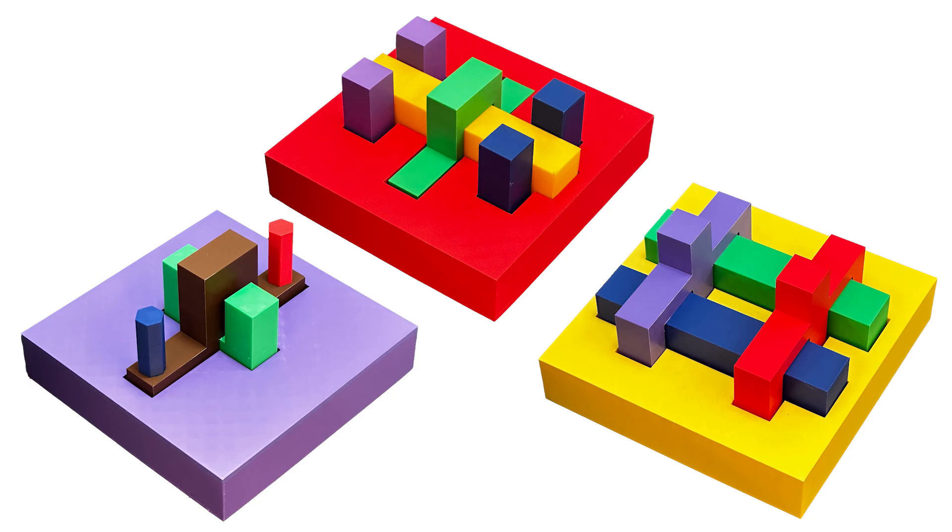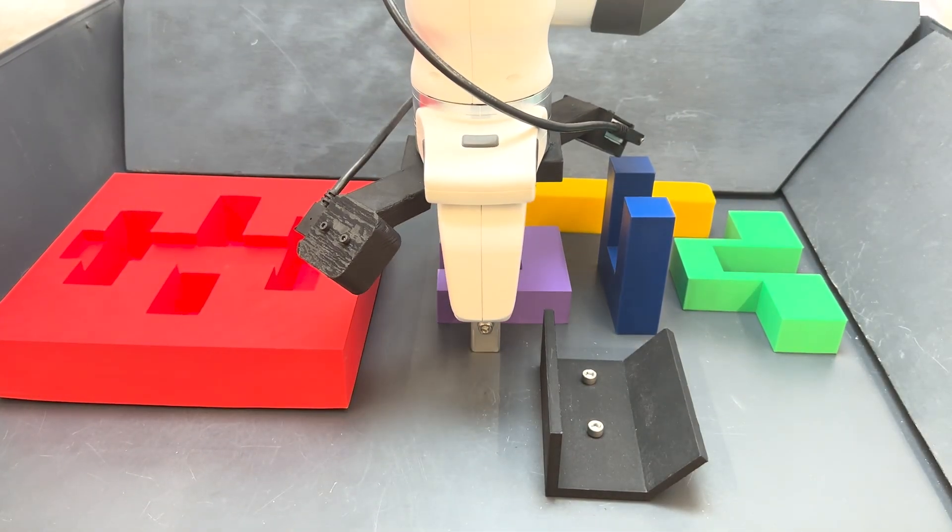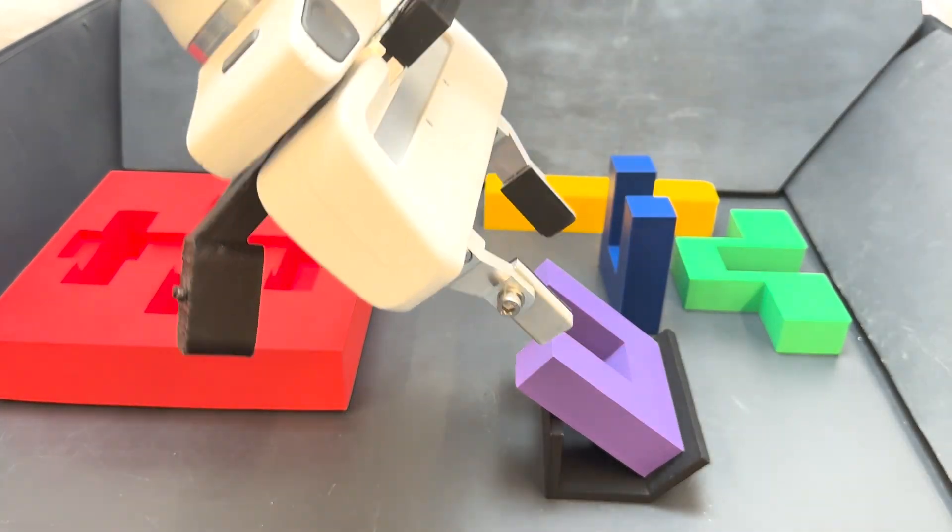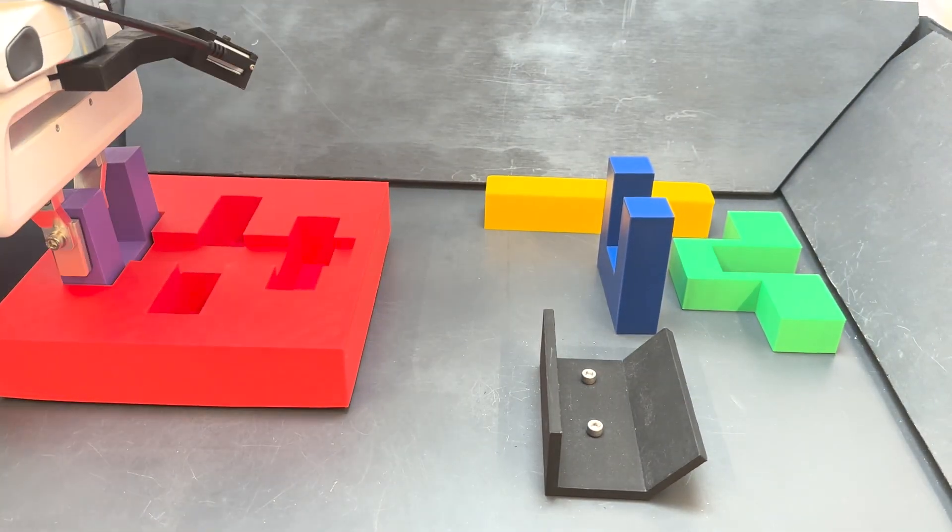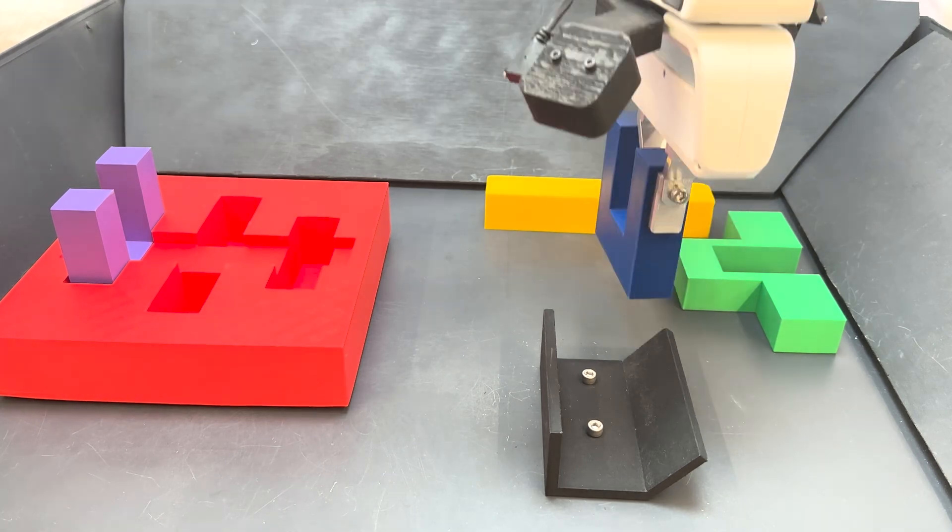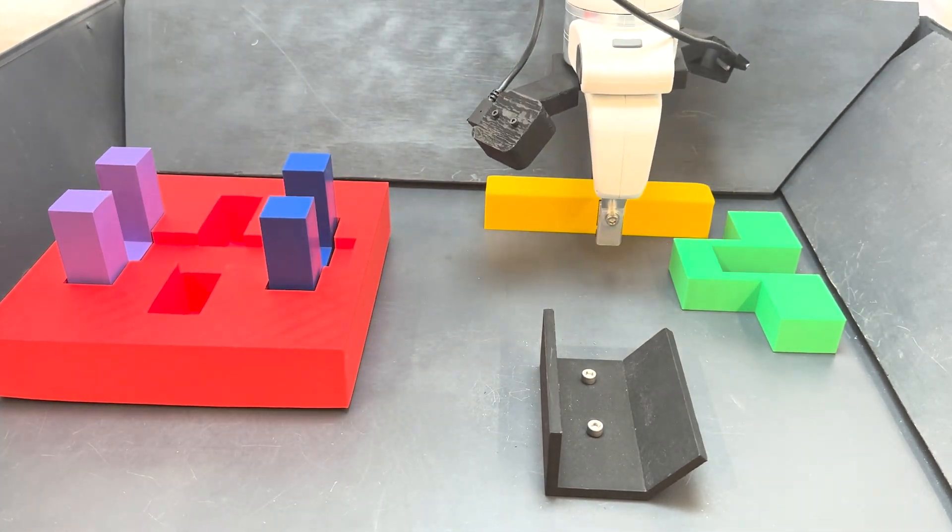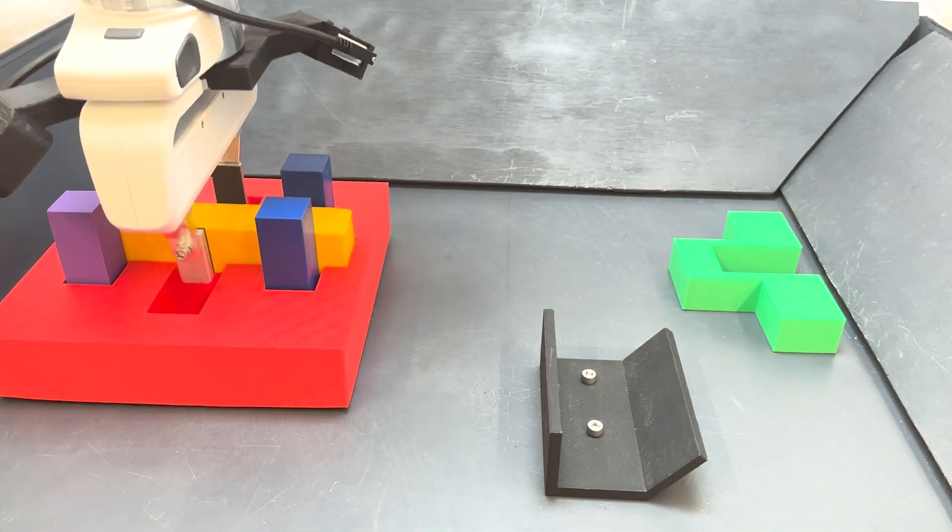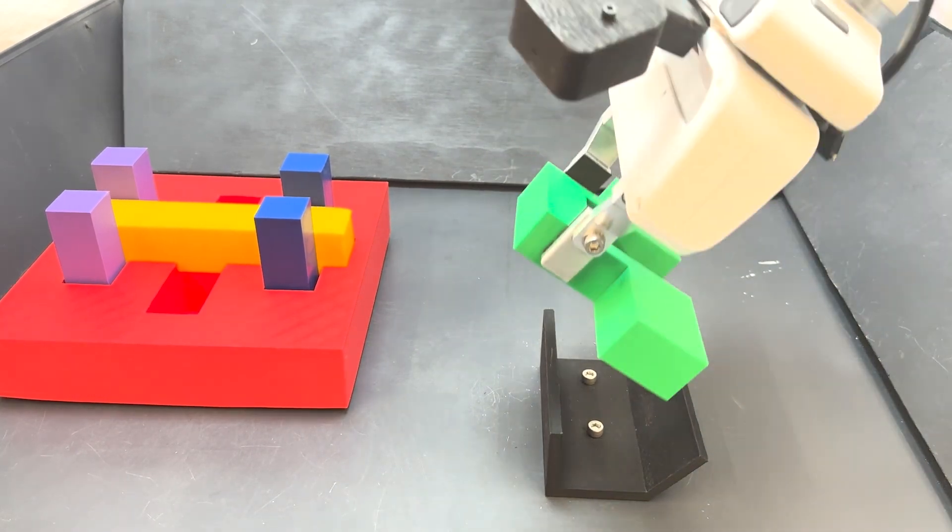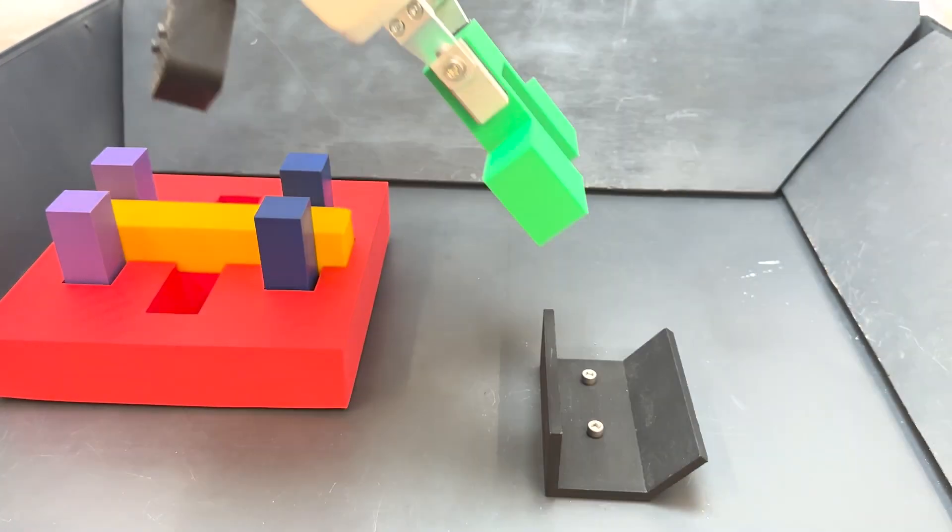The second part of the benchmark is the multi-object, multi-stage manipulation task. We design three assemblies, each having four components that need to be assembled in a specific order, using the same manipulation skills as the previous task, but with the added challenge of spatial reasoning to figure out the order to assemble the pieces in.